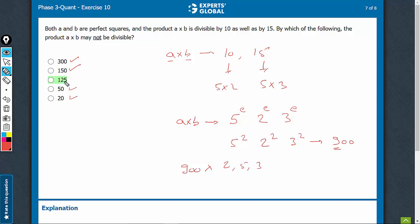125 doesn't necessarily have to be a factor. See, for 5 square, it will not be a factor. For 5 raised to power 4, it will be a factor.